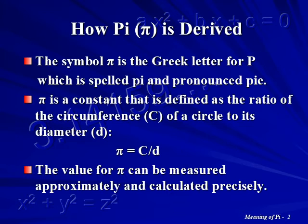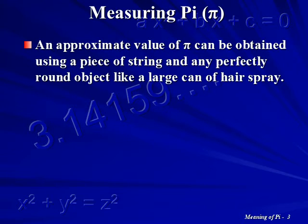The value for Pi can be measured approximately and calculated precisely. How can we measure the value of Pi? An approximate value can be obtained using a piece of string and any perfectly round object like a large can of hairspray.